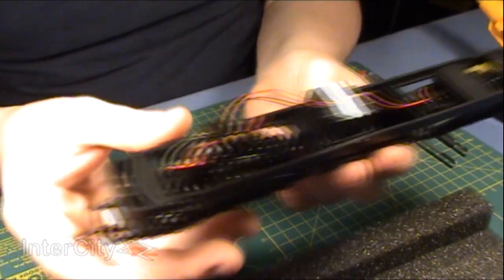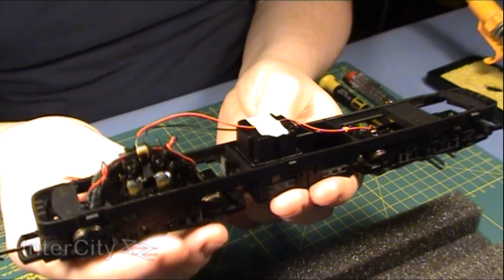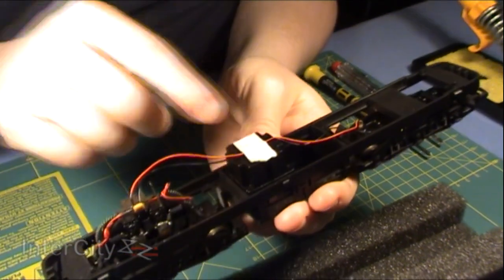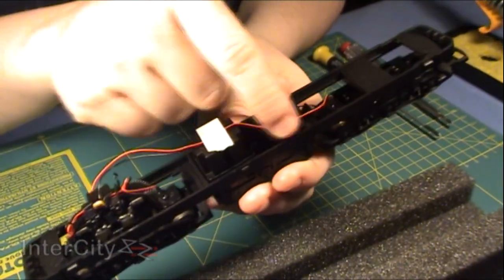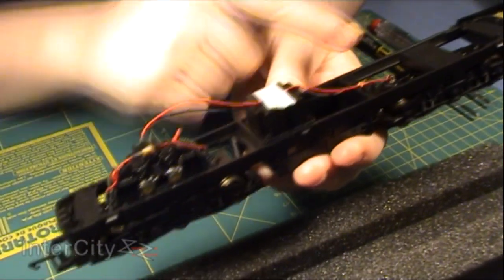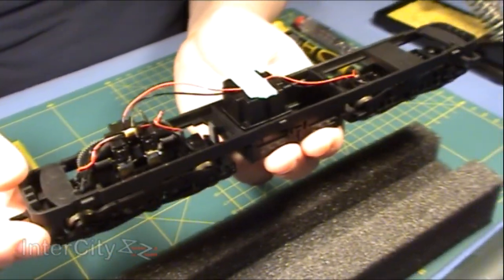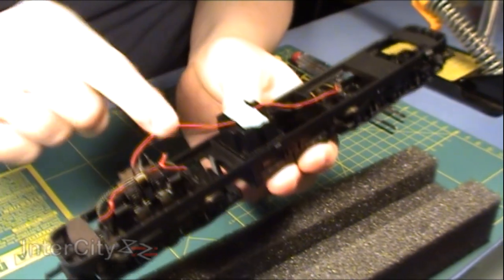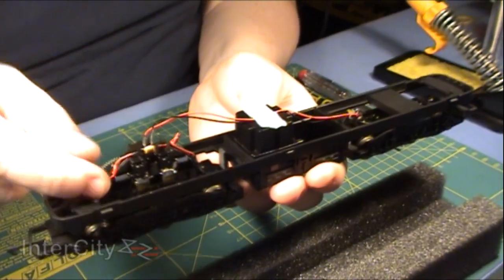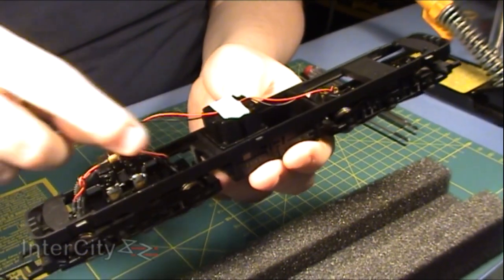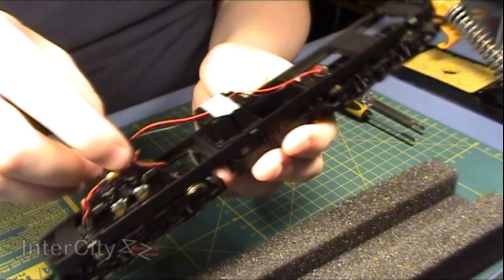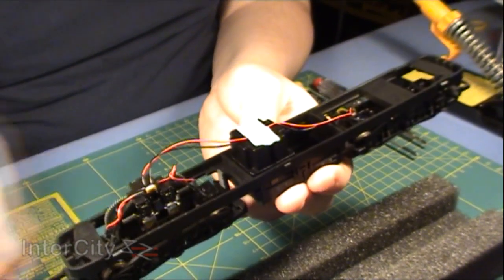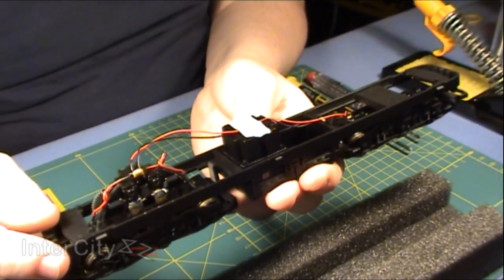This particular one, being a more recent model, is quite nicely laid out. You can see they've used different colour wire to give a good indication of positive and negative. There's a whole collection of wires coming from the motor bogie so everything is nicely isolated and easy to trace.